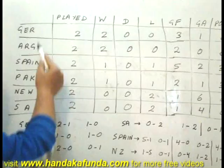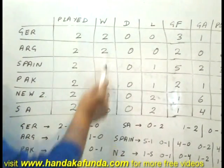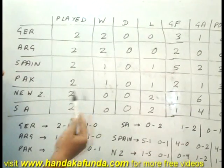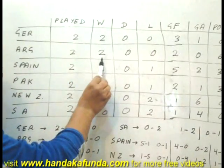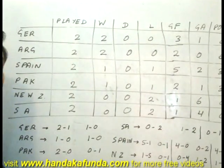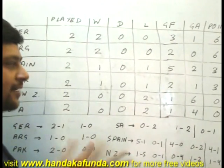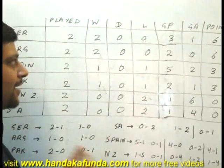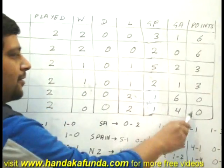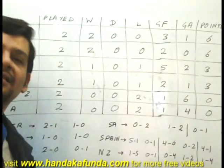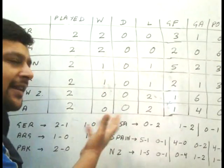I am given that every team has played two matches each. This column indicates the number of matches the respective team has won — Spain has won one match, Argentina has won two matches, South Africa has won no matches. This column indicates the number of draws. As you can see, there are no draws till the second round. This is the goals for column, this is the goals against column, and this is the points column. You get three points for a win, zero for a loss.